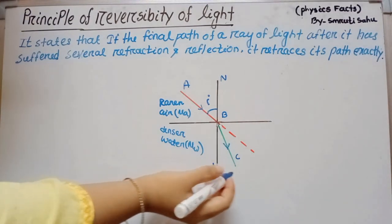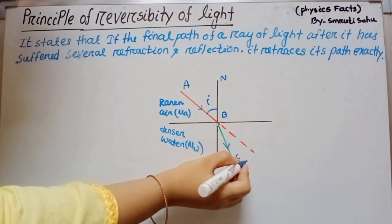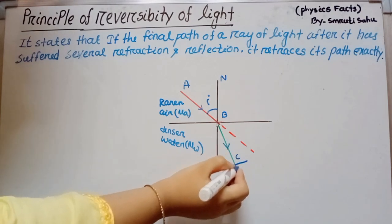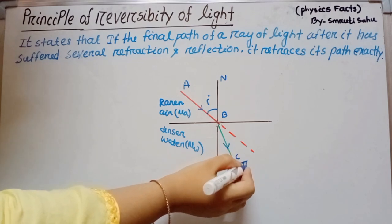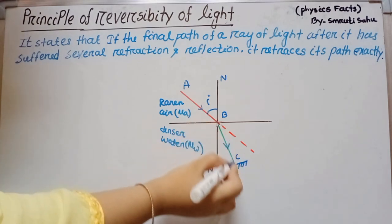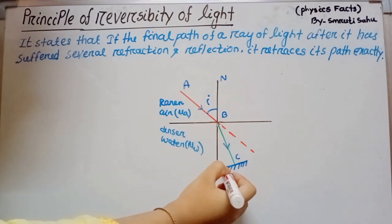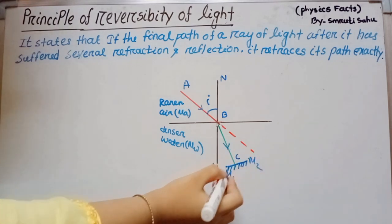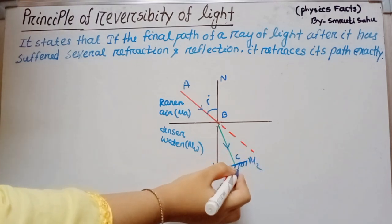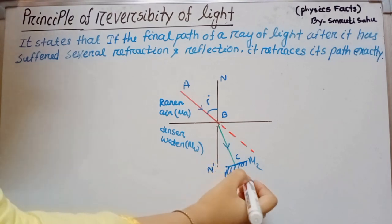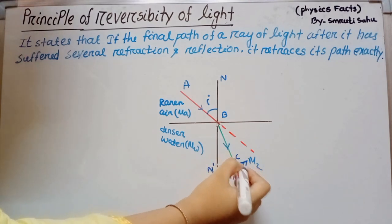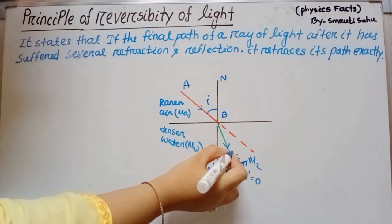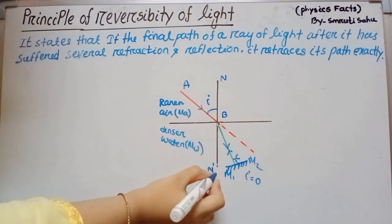If we place a mirror perpendicular to the refracted ray — that is, normal to the refracted ray — this mirror is M1M2. In this case, the angle of incidence is equal to zero, so the ray returns along its own path.